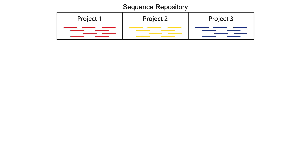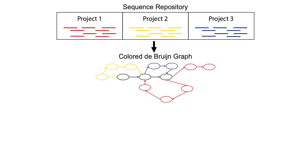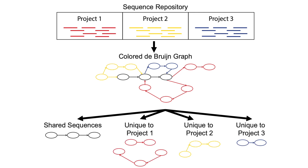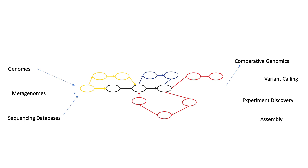These colored de Bruijn graph data structures have also been applied in comparative approaches, where sequencing reads from multiple projects can be used to generate a de Bruijn graph. Unique and shared k-mers from this graph can be assembled separately, allowing for the identification of sequences that are present in subsets of the samples and may be biologically significant. Sequencing is going to continue to be an integral part of microbiome research, and new methods will continue to be developed to analyze these data in new and exciting ways. The de Bruijn graph has been an essential component of many of the methods so far, and will likely continue to play a significant role in how we work with these data in the future.